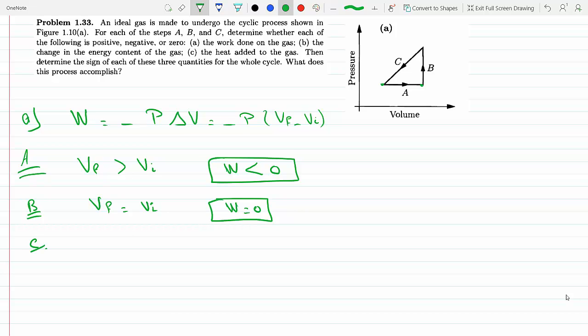Now, for C, we can see that V final is less than V initial. Remember, the volume is on the x-axis here. So, the more you go to the right, the greater the volume is. This is less than V initial, which makes the difference in volume negative. But there is another negative here, which would make the work positive, greater than zero.